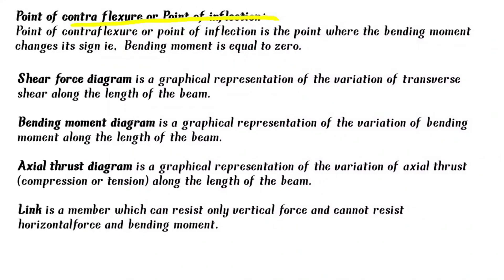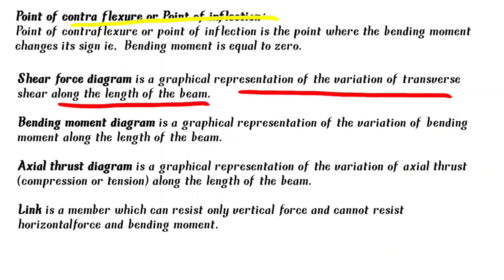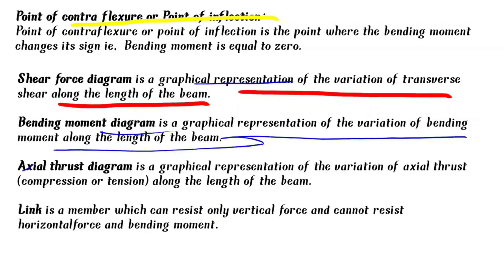The shear force diagram is a graphical representation of the variation of transverse shear along the length of the beam. The bending moment diagram is a graphical representation of the variation of bending moment along the length of the beam. The axial thrust diagram is a graphical representation of the variation of axial thrust along the length of the beam.